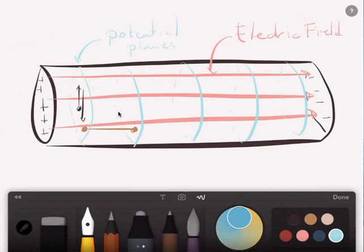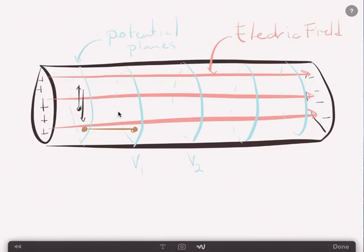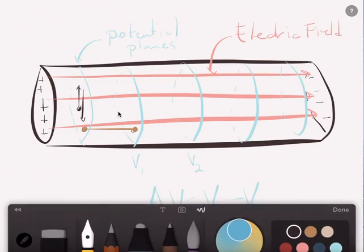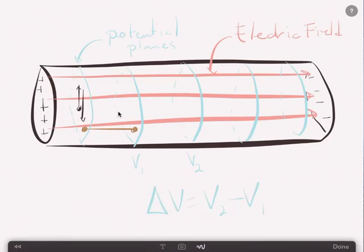So, we call these our potential planes. And between these, if we have a potential here and we just call it V and then a potential here, we primarily look at the potential difference. So, the potential difference is equal to V2 minus V1. And it depends on which way the charge is actually going.